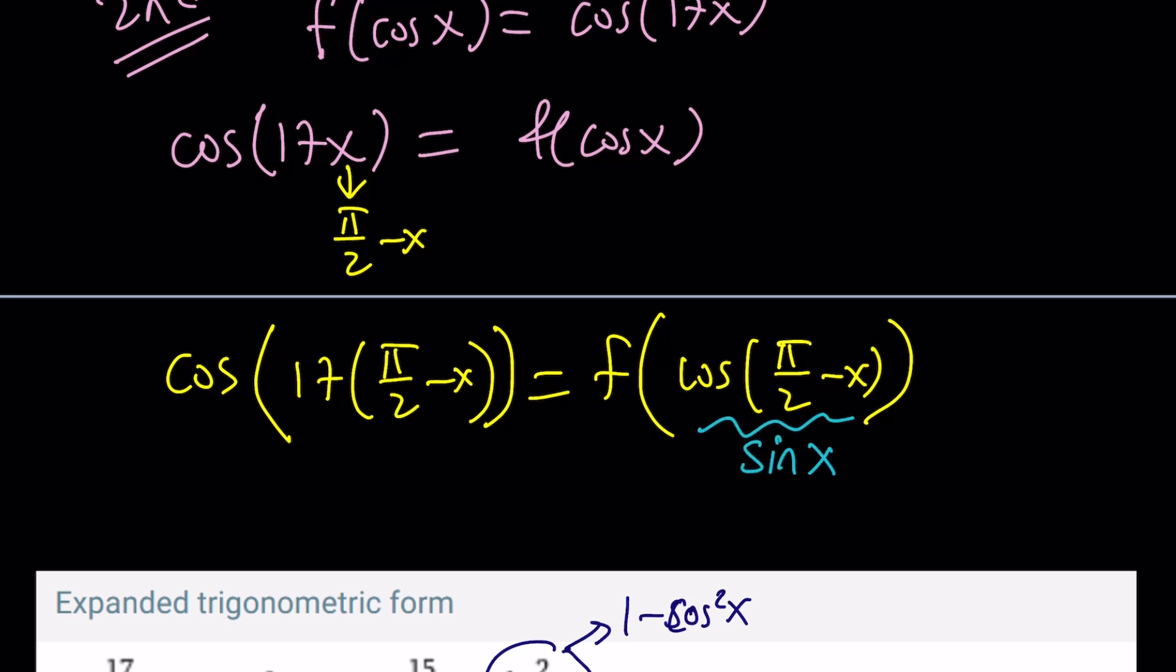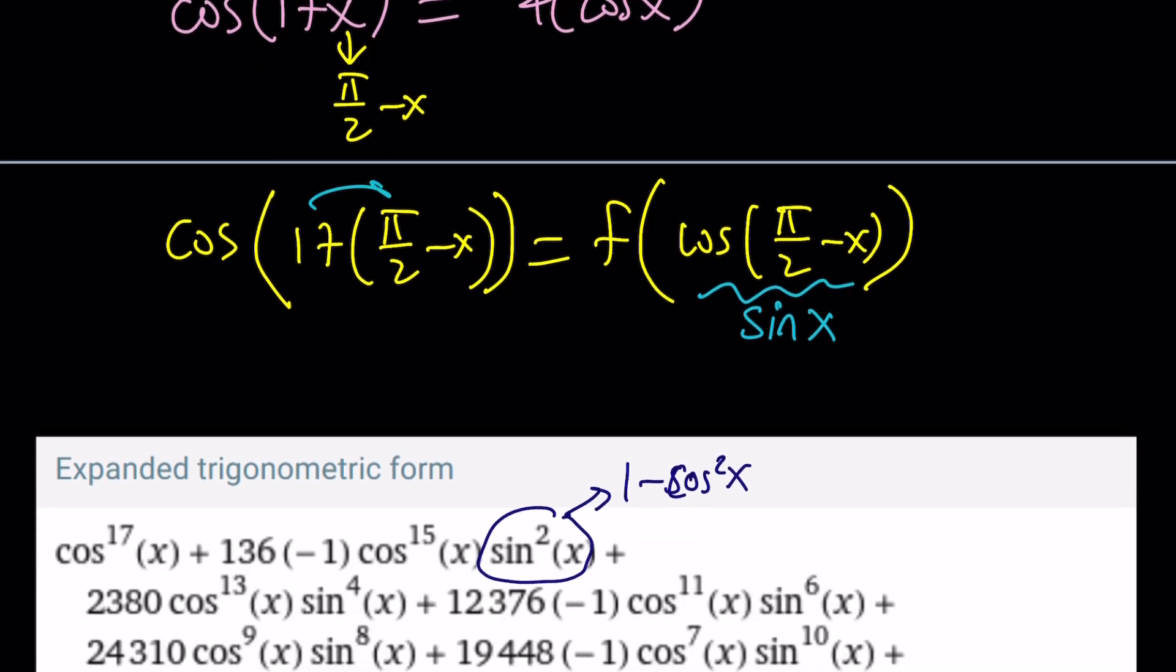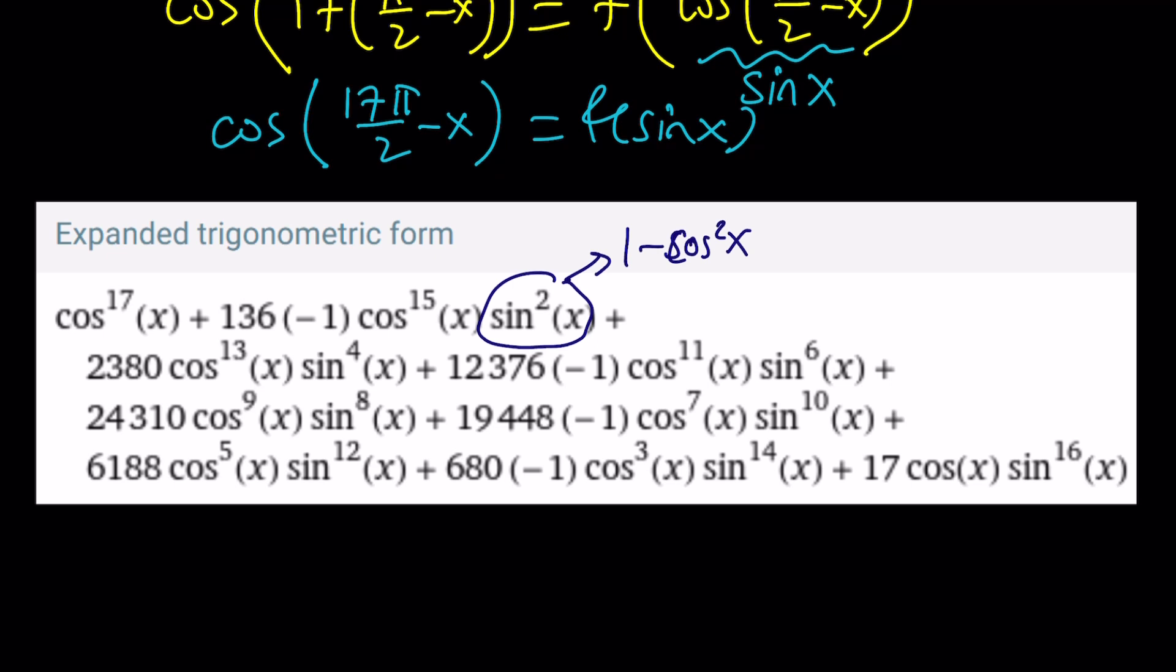And that's what we wanted to find, f(sin x). But what about the left-hand side? Let's go ahead and simplify it. First distribute, you'll get cos(17π/2 - x) = f(sin x). And then if you work on the left-hand side a little bit more, you can actually simplify this because it contains multiples of 2π.